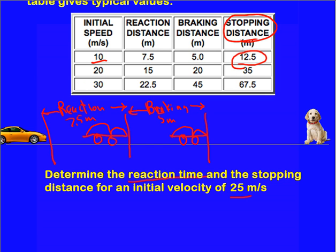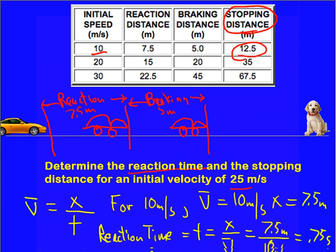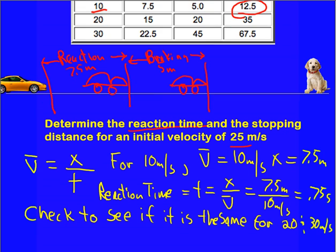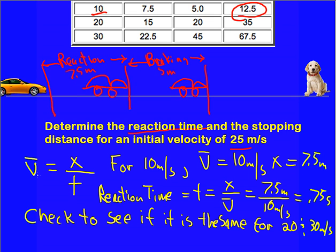And so to do this, we need to use our average velocity equation. That's pretty easy. Average velocity is distance over time. And I'm going to use the 10 meters per second data in the table. The rest of it is redundant. When you do this one yourself, maybe try using 20 or the 30 meters per second data. And so the average velocity is 10 meters per second during the reaction time because you're not changing your speed at all. The distance is given as 7.5 meters. That is from the table up here.